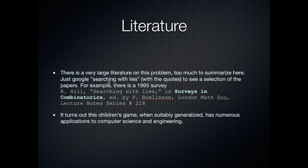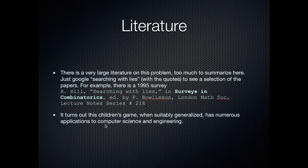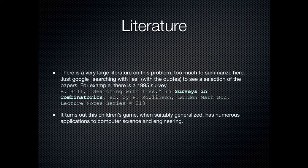There's a very large literature — if you just Google 'searching with lies' you'll see a huge number of papers. There's a survey paper from 1995 written by Hill. There are a number of papers on the internet in PDF form, though no books, as far as I know, cover this topic. Even though it comes out of the child's game 20 Questions, and it's also a variation on 'What's My Line,' this actually has some serious applications to engineering and computer science.